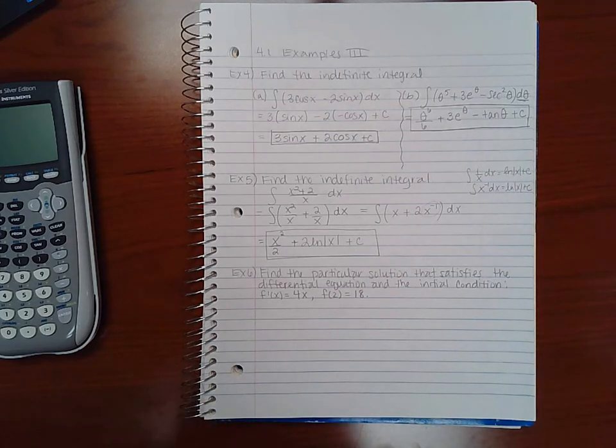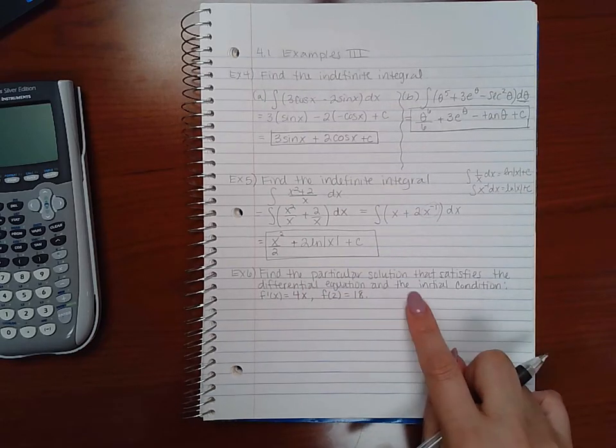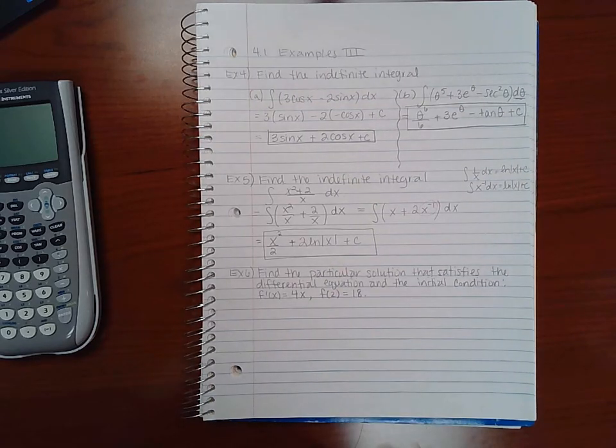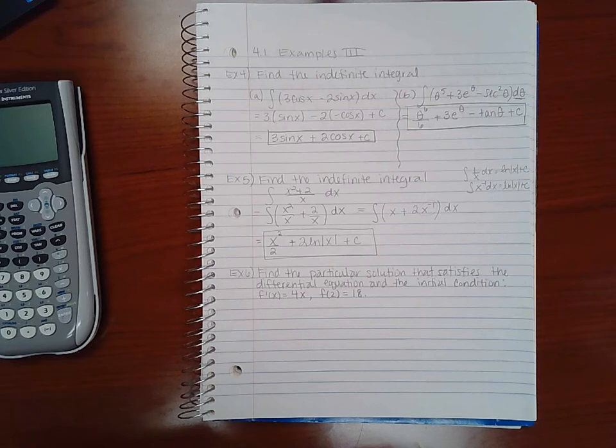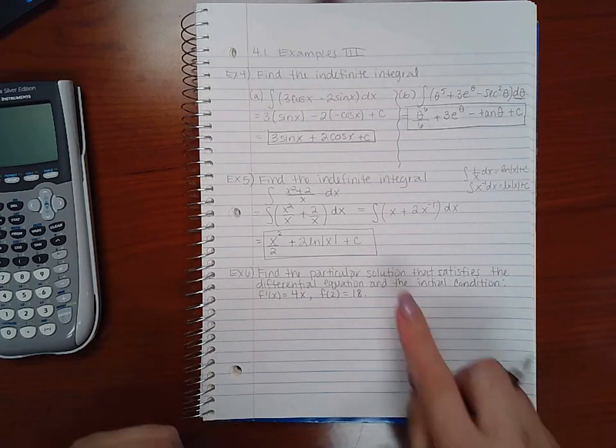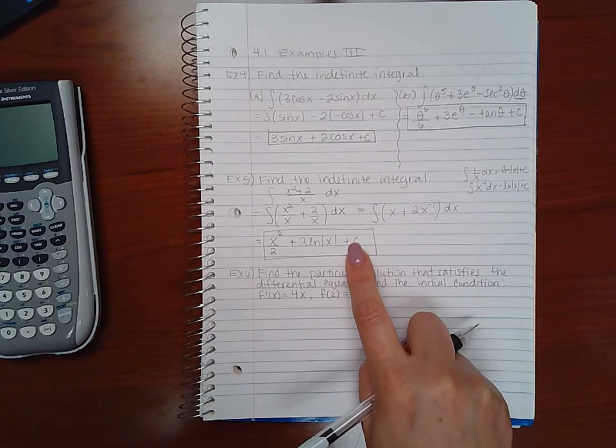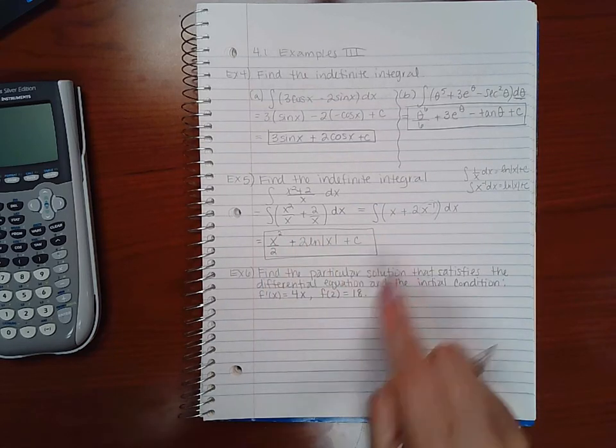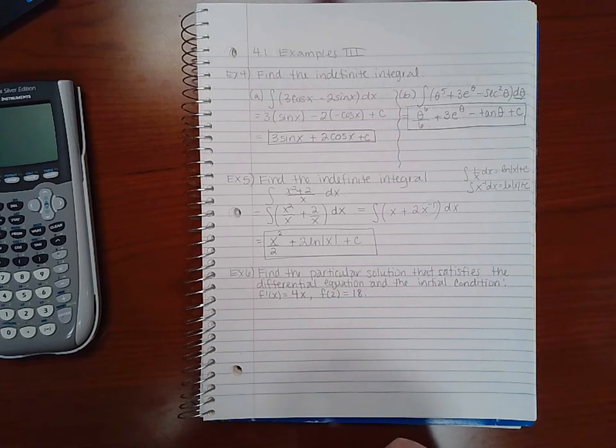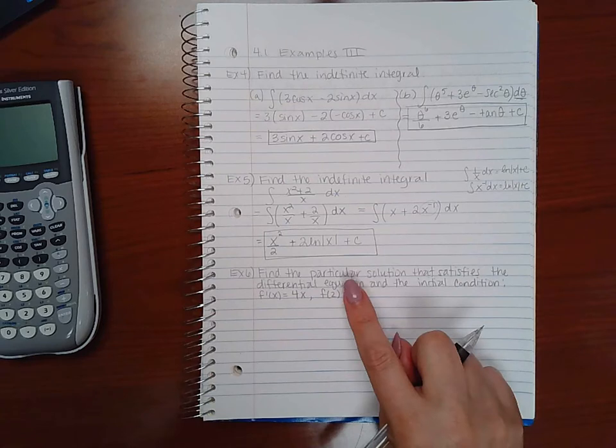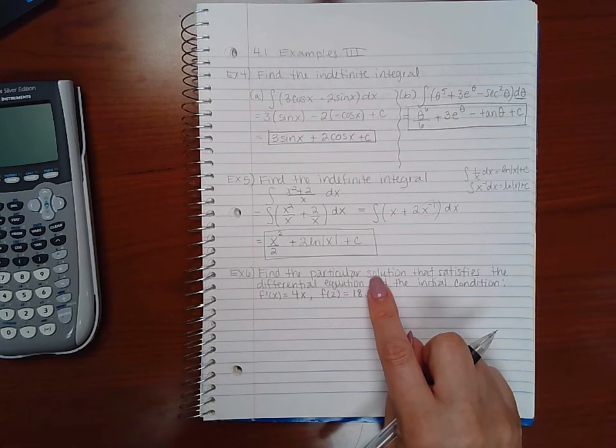Now here's where things start to get a little bit interesting. So example six says find the particular solution that satisfies the differential equation this and the initial condition this. So what this means is that notice how every single time we've been finding the general solution, we've been putting this plus c, which says that's the antiderivative. But if I put a plus c, this is all the antiderivatives. Well, now what they want is they don't want you to find the general solution. They want you to find what's called a particular solution. So what you need to know is what is that c value exactly.